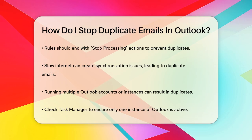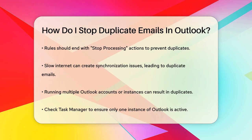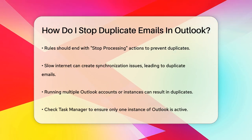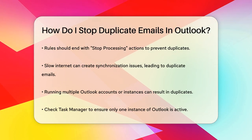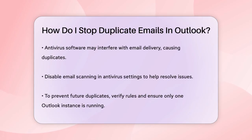Antivirus software can sometimes interfere with your emails. Many antivirus programs scan your emails, which can cause timeouts and result in duplicate emails. To fix this, go to your antivirus software, look for the setting to disable email scanning, and then restart Outlook.